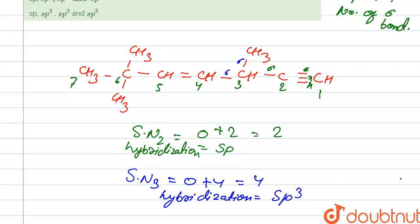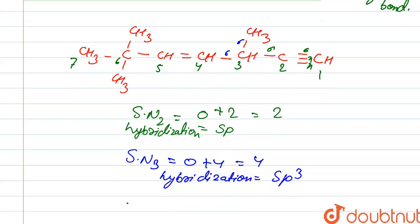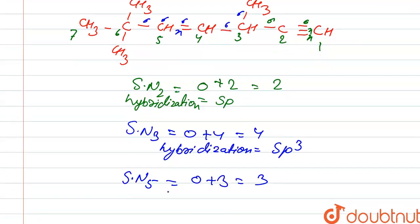Next is our steric number for carbon five. If you see here, this is the carbon five: one sigma bond, one sigma bond in CH, one sigma bond, and one pi bond. So total three sigma bonds. Steric number is three and its hybridization is sp2 hybridization.